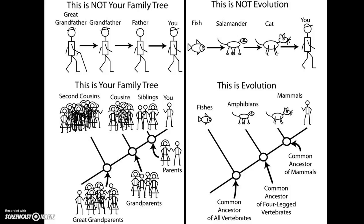As a precursor to talking about animal diversity, this infographic puts things in perspective regarding how evolution works. On the left we see 'this is not your family tree' — a linear great grandfather, grandfather, father, and you. It doesn't really work like that. A lot of common memes and schematics from groups trying to make people believe evolution is not a fact show this linear progression with gaps that is not actually based on fossil evidence. Evolution did not actually happen this way.